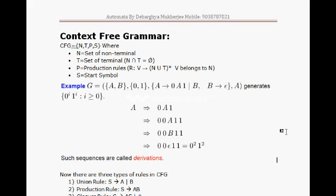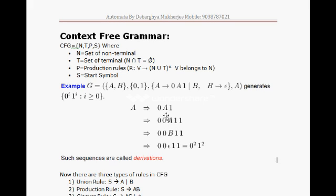We have also learned that a context-free grammar is accepted by a PDA or push-down automata. For a sample language like 0^2 1^2, we can make the derivation starting from A as our starting symbol, applying A → 0A1. Then we replace A with 0A1 again, then replace A by capital B, and finally replace capital B by epsilon. This gives us 0^2 1^2 — a typical example of a context-free grammar derivation.